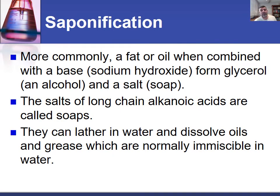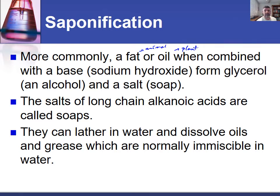What we tend to do is select a fat or an oil — commonly these are animal or plant fats with different melting and boiling temperatures. We combine them with a base, most commonly sodium hydroxide, in order to form the alcohol, the glycerol, and also the salt, which is the soap.